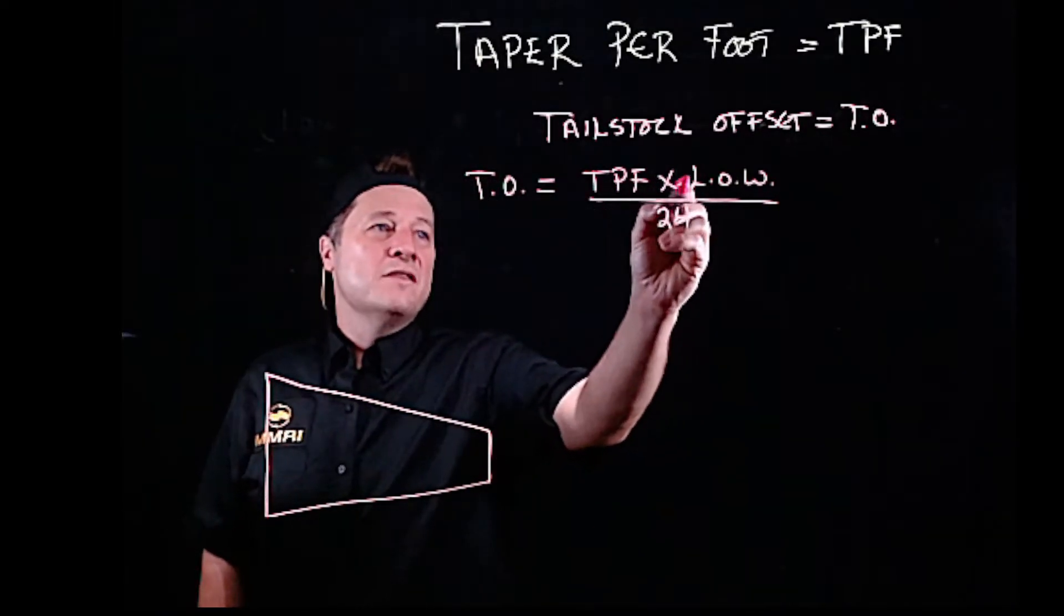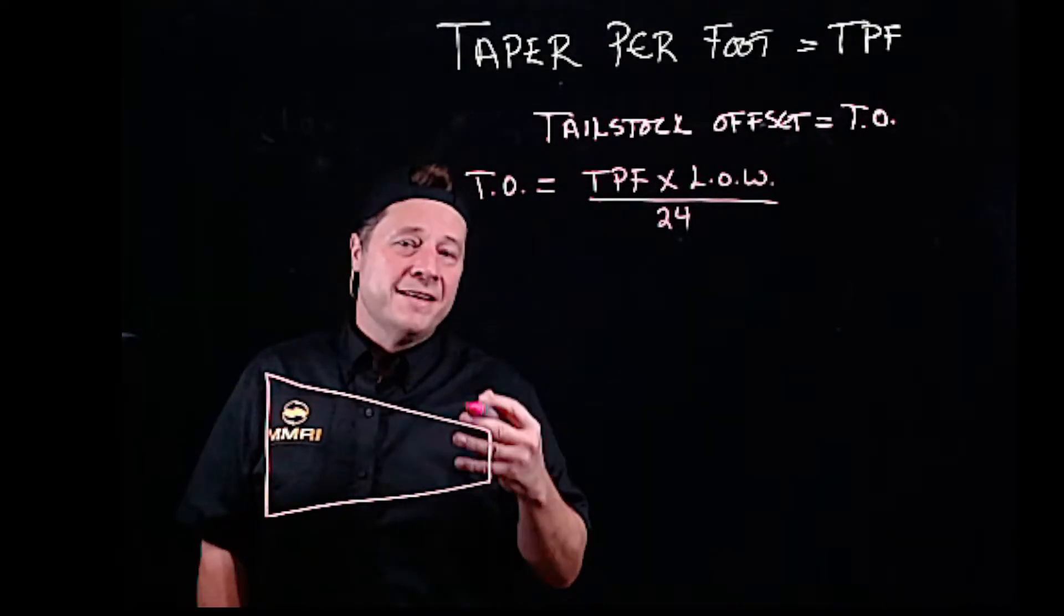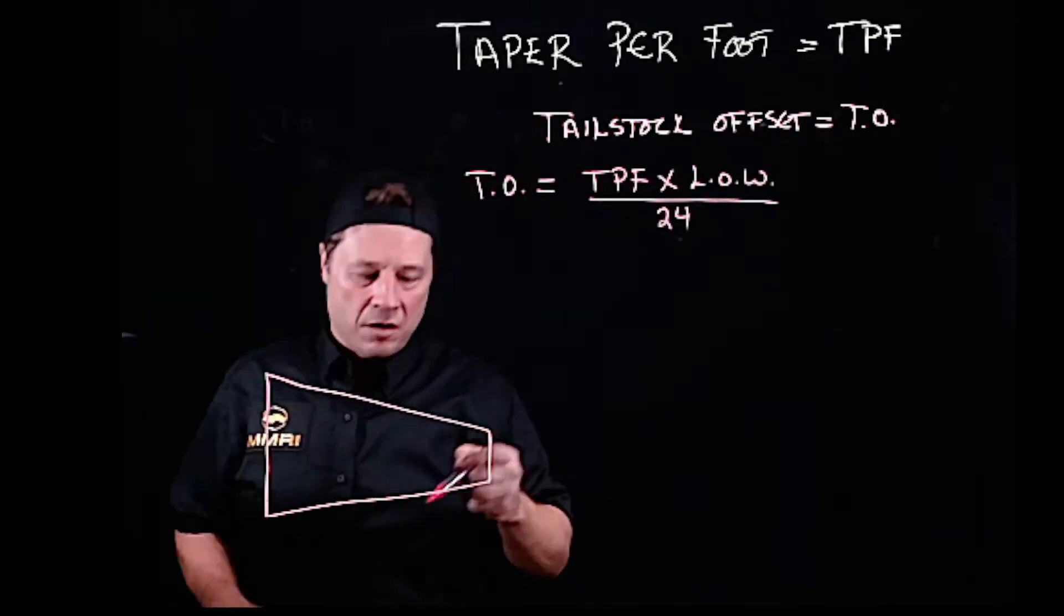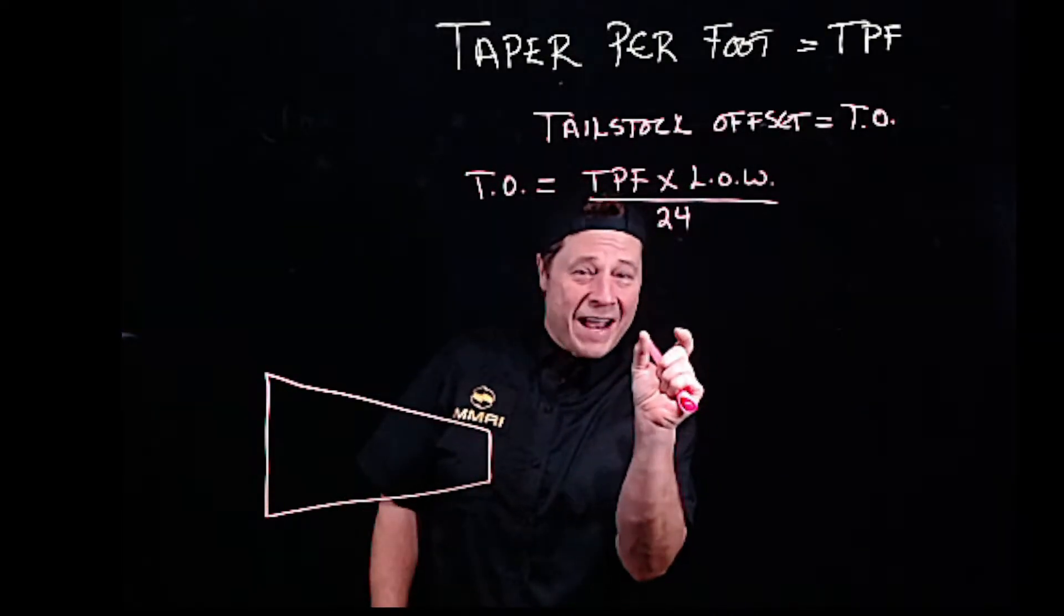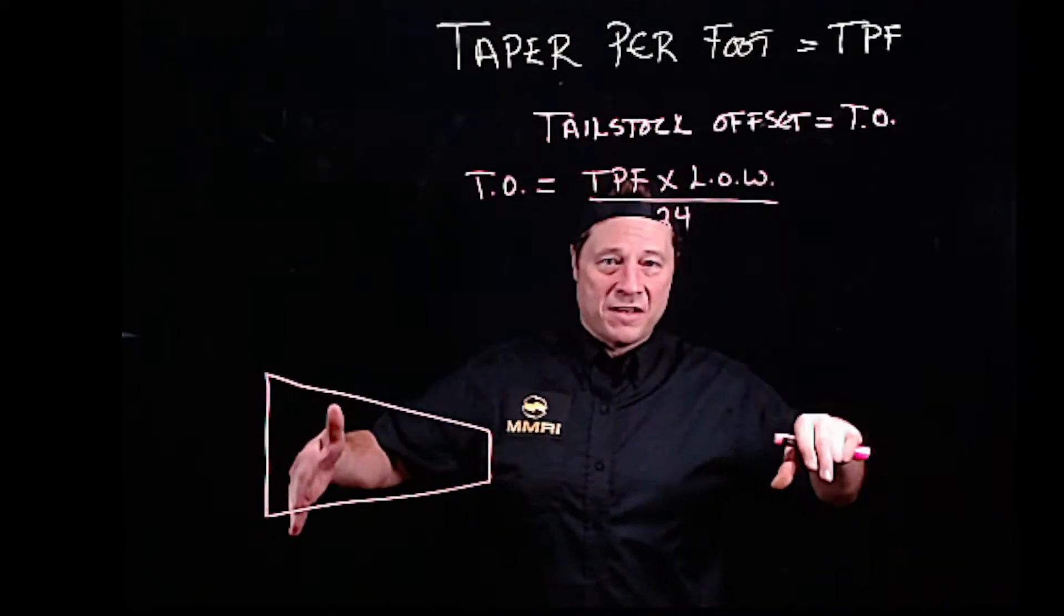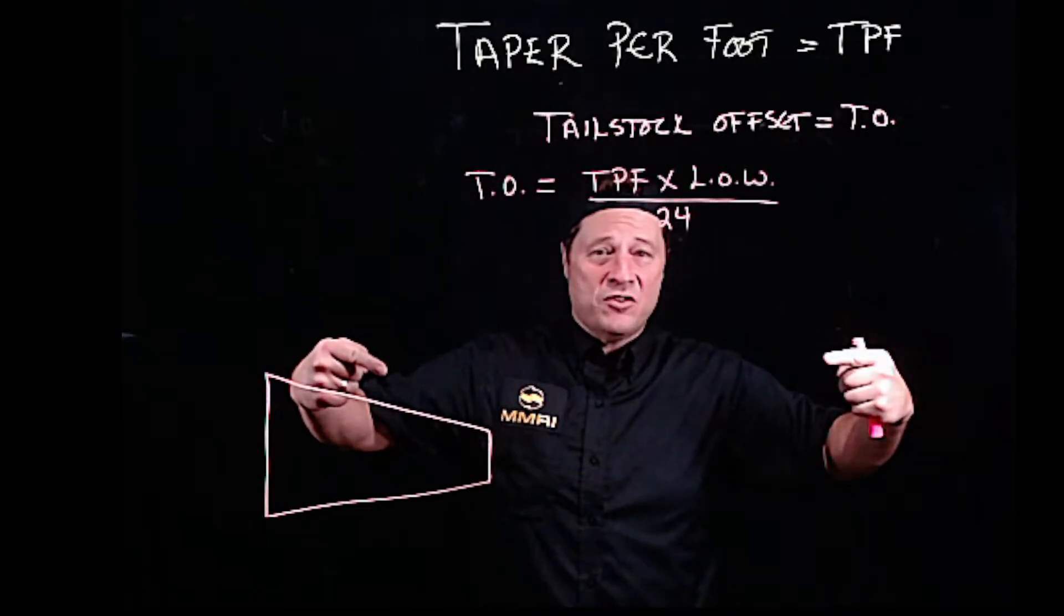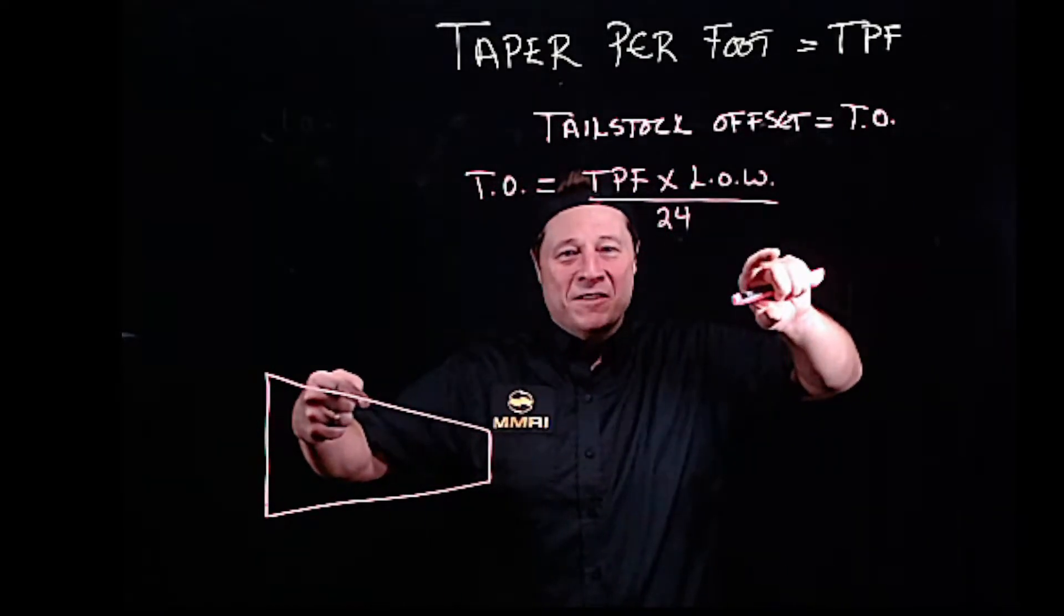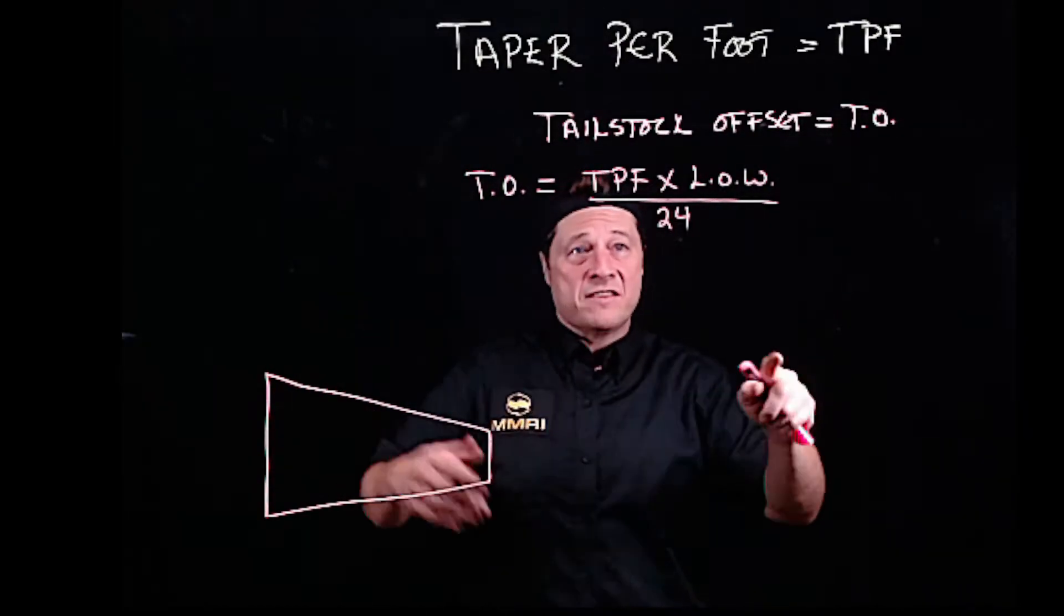Taper per foot times length of work. Now, in taper per foot it's length of taper. In setting the tailstock offset, we need to know how long the work is, even if the taper is only that long. We need to know how long the work is because when I have my parts sitting between centers and I adjust the tailstock away from me, the whole bar, that whole piece of bar stock, pivots. I need to know how long that bar is; that's part of my formula.